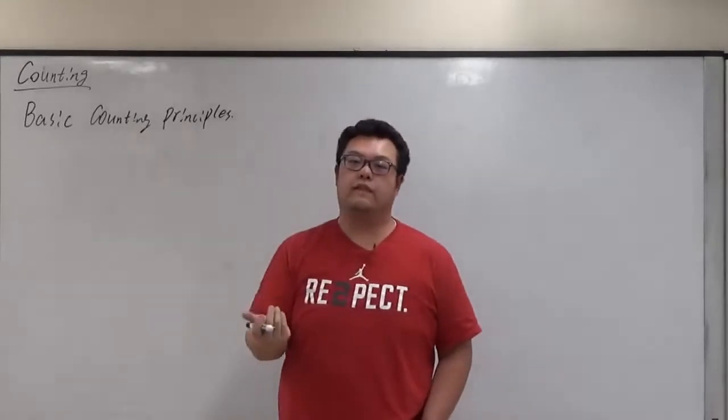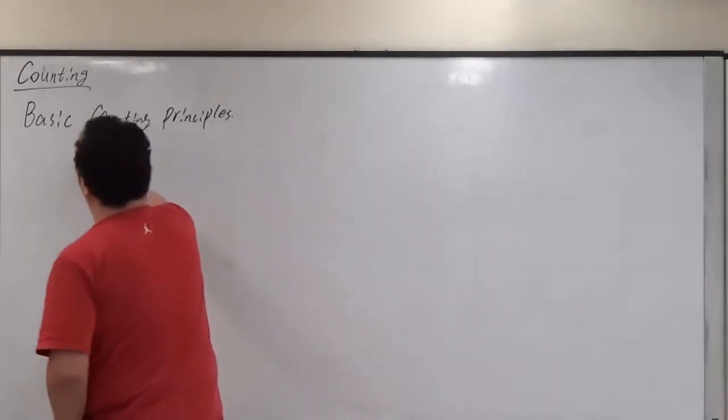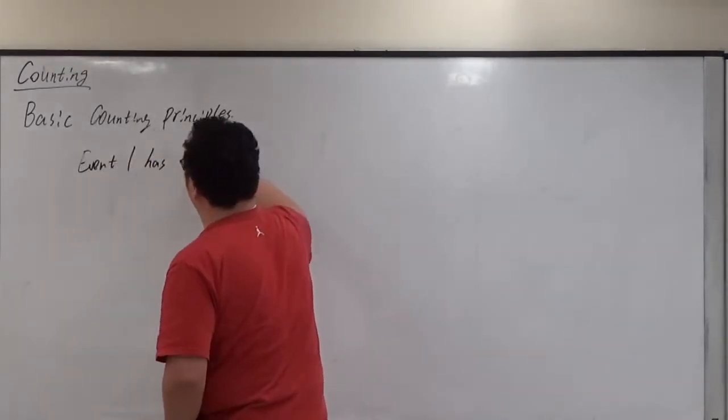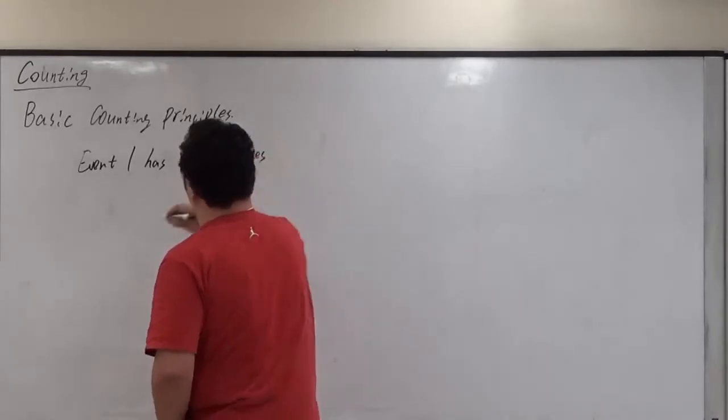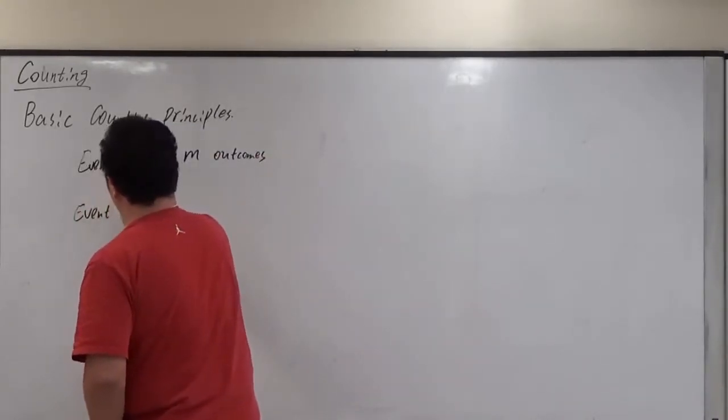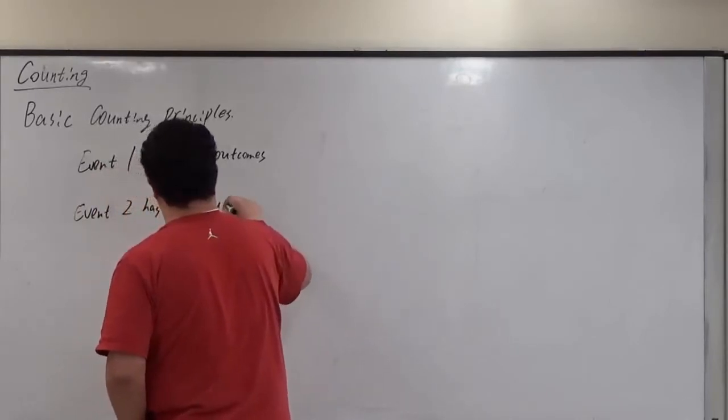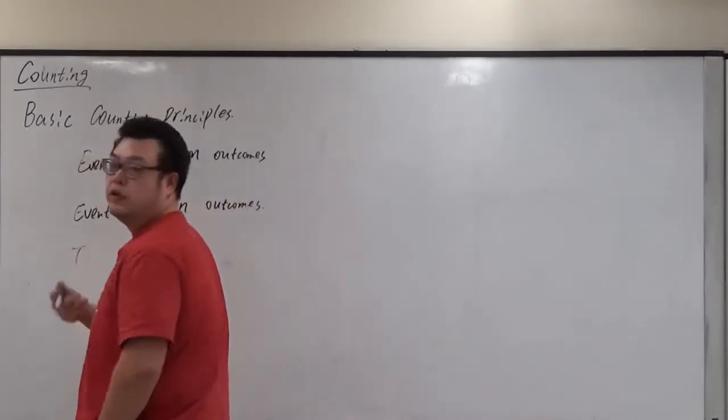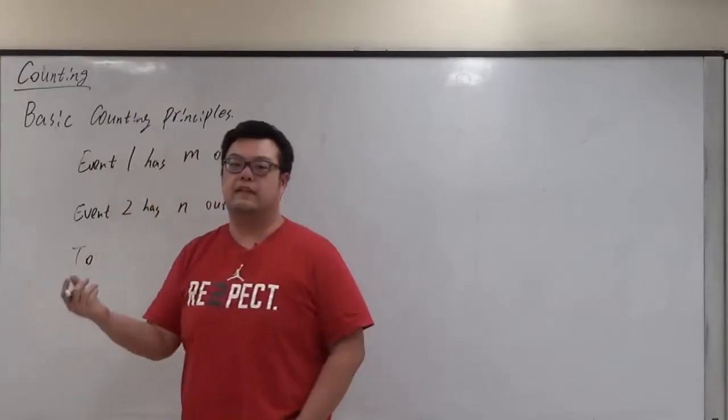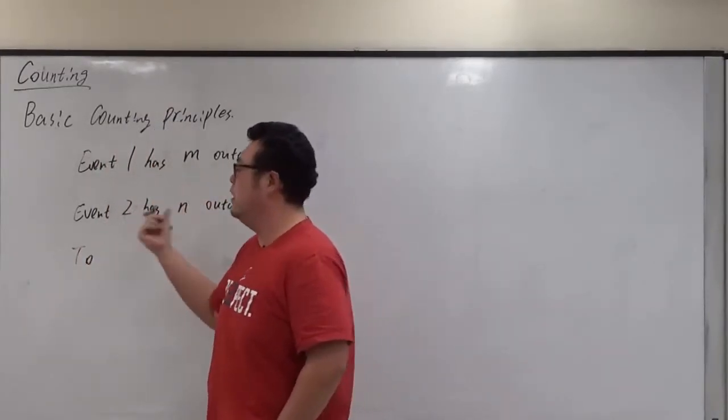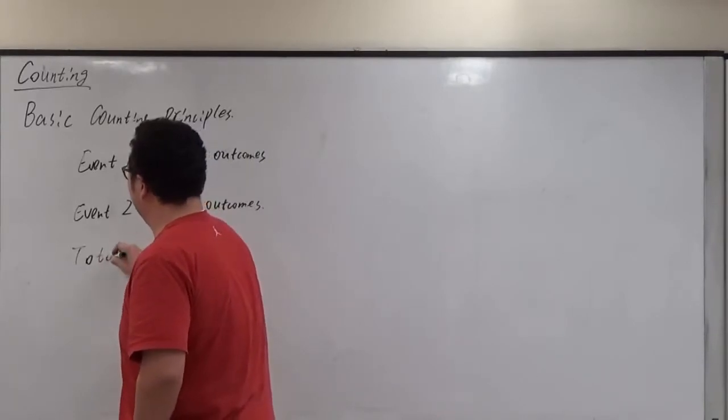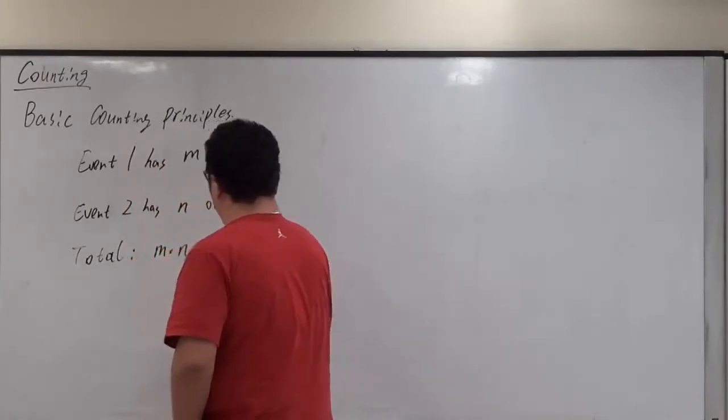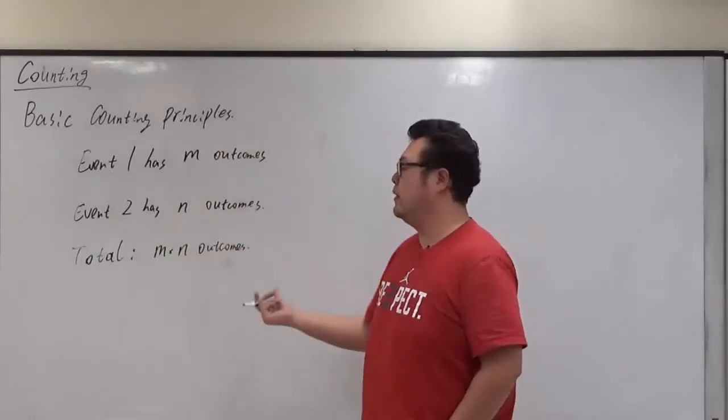Basically, if we have two events - event one has m outcomes, while event two has n outcomes - in total together, that should be the product because we do things step by step. So event one has m outcomes, then the second event has n, then the total will be m by n. Just multiply them together.